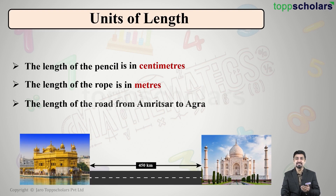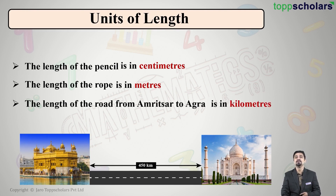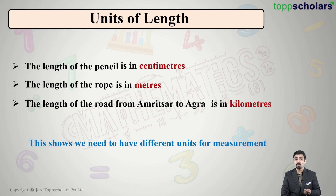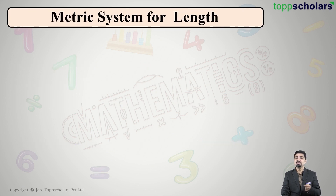For the distance from Amritsar to Agra, you would not be able to measure it in those smaller units. We say we have traveled several kilometers, so the length of that road is measured in kilometers. What we understand from this is that we require different units for measurement depending upon its use.